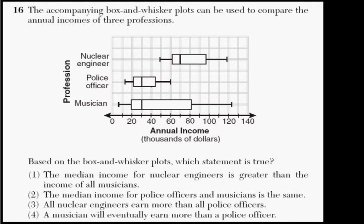Okay, problem number 16 on the January 2009 Regents Math A exam. It says the accompanying box and whisker plots can be used to compare the annual incomes of three different professions, and the professions are listed here. We have a nuclear engineer, a police officer, and a musician. This being the nuclear engineer's annual income in thousands of dollars. This is the police in the middle and musicians out here at the end.